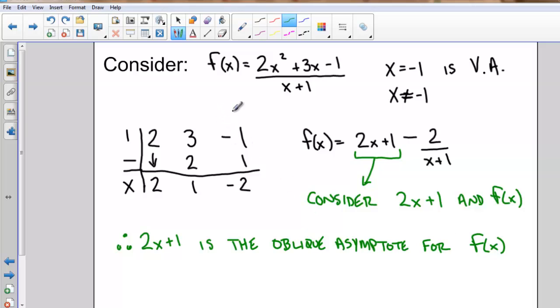This means that 2x plus 1 is the oblique asymptote for the function f of x. So when I'm trying to find an oblique asymptote, when the degree of my numerator is exactly one more than the degree of the denominator, I do the division, I get my new function, and I take that linear piece in my function, in this case 2x plus 1, and that is the equation of my oblique asymptote. The remainder part doesn't really matter to me. All that matters is the equation of the oblique asymptote.